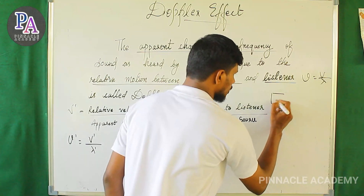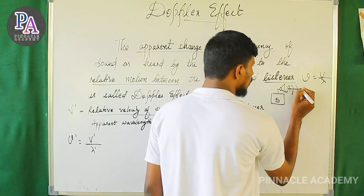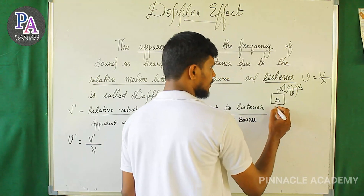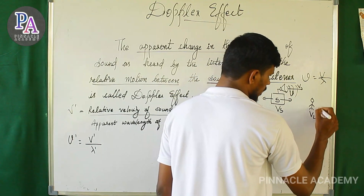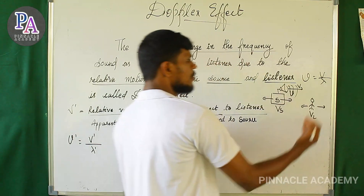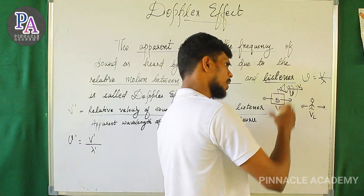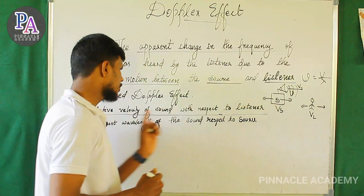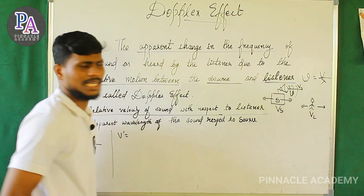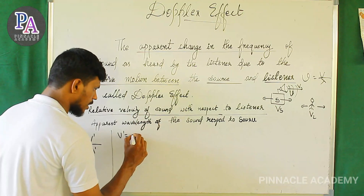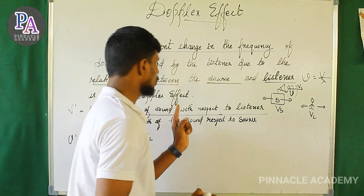Let's set up the problem. There is a source — there is a loudspeaker. The sound is produced by a loudspeaker. The source velocity is called Vs, the listener velocity is VL, and the source frequency is new. V minus VL is the relative velocity of sound with respect to the listener.